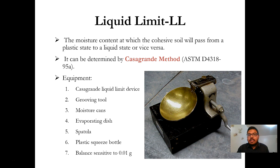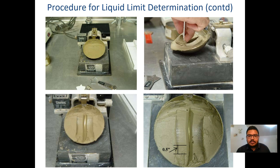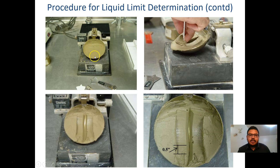To determine the liquid limit of a soil sample, there are various methods. We will follow the Casagrande method. In the picture, you can see the Casagrande apparatus. First, we need to take some soil samples and pass them through a No. 4 sieve. Then we mix the soil sample with water to make a soil paste, and place that paste on the Casagrande device. We need to make sure the depth of the soil paste is around 8 mm.